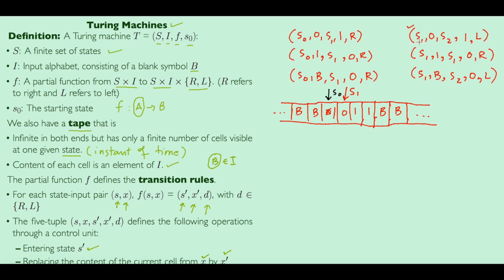Now we are at the next cell with state S1 and input 0. S1 and 0 in the table says: move to state S2 and move left. So we go back one cell. Now we have S2 and the current cell contains 0, so we change this 0 to 1. Now we are at state S2 and input 1, but S2 and 1 is not defined in the table, so the machine halts here.